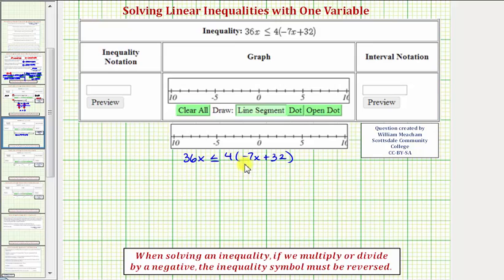So looking at the inequality here, we first want to clear the parentheses by distributing positive four.